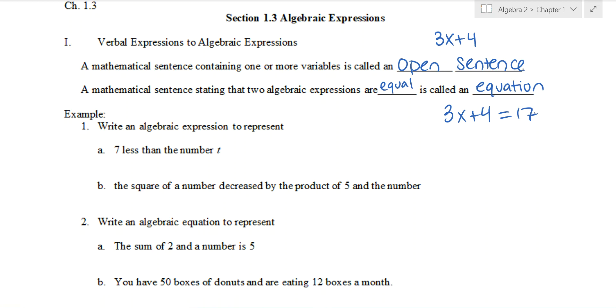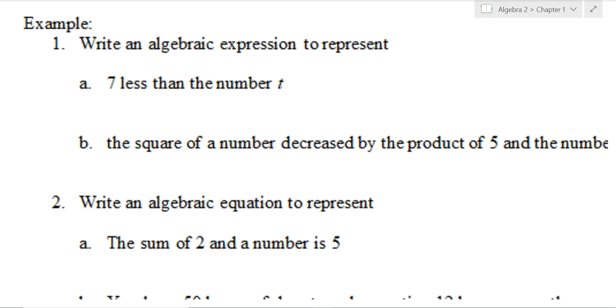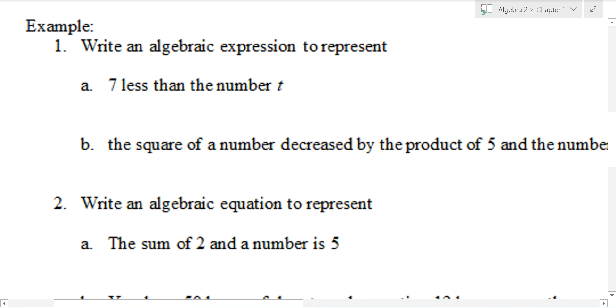All right, next section, you'll see some of these on your test as well, where they give you a written expression, you have to write it in algebraic terms. So first one says 7 less than the number t. A lot of people have a difficult deciding whether it is 7 minus t or t minus 7. The one on the left is you're subtracting t, so that is t less than 7. That's not what we want. The one on the right is 7 less than t. So make sure you know the difference between those two. We are subtracting 7, so it is 7 less than t.